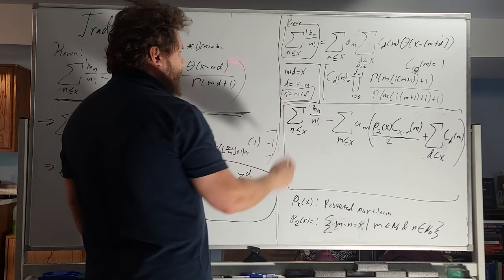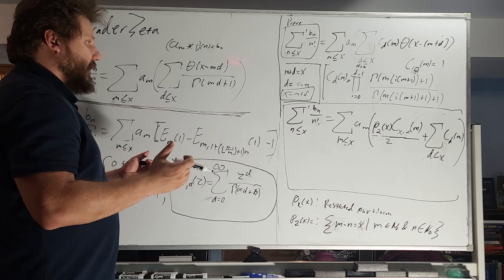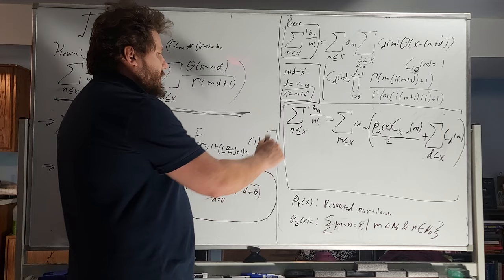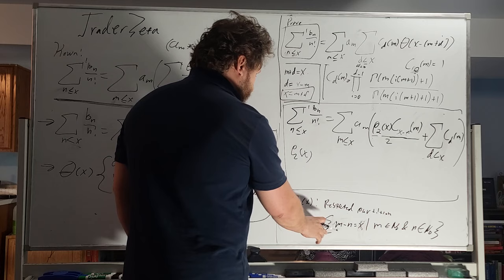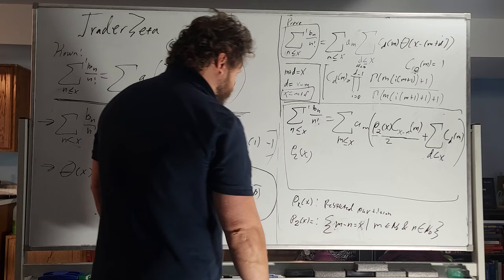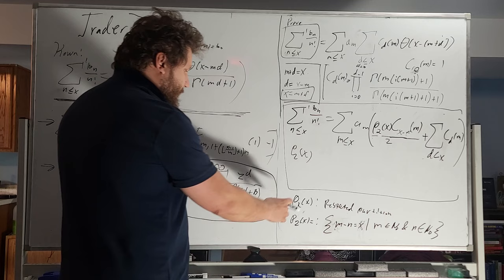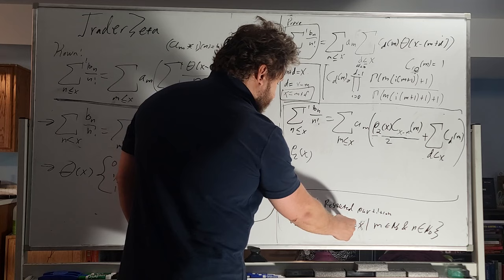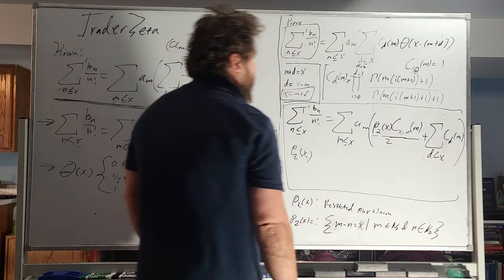And basically, this statement right here is a partition, right? So if you've studied Ramanujan, or if you've studied any of the analytic number theory, you hear a lot about partitions. So this is going to be a partition p2 of x, right? And it's defined right here. So this is the restricted partition. So p sub k, so we restrict the number of numbers that we have in the partition. And in this case, p sub 2 of x is going to be defined as m minus d equals x, such that m is an element of the natural numbers, and n is an element of natural numbers.